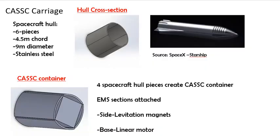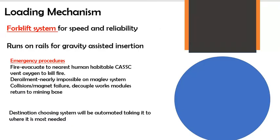Cask containers to be made of the exterior metal plates of transport spaceships, one rocket providing enough for 14 casks. Each cask will be loaded in and out of the train system via a railed forklift system for speed and reliability.